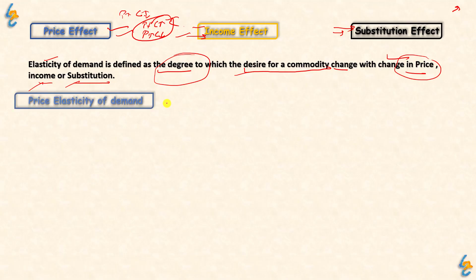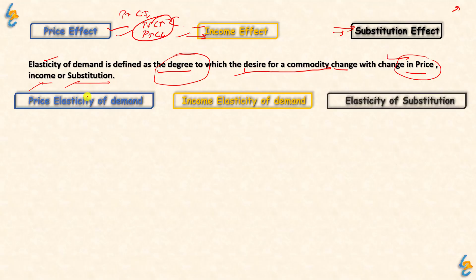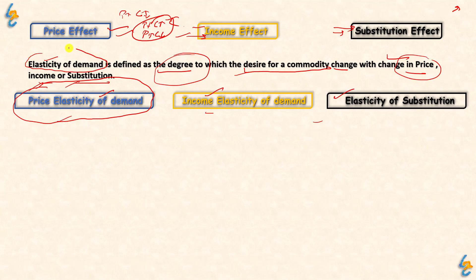So here are three cases: Price Elasticity of Demand, Income Elasticity of Demand, and Elasticity of Substitution. In this video, we will talk about Price Elasticity of Demand. If we are not told which type it is, then we will talk about Elasticity of Demand generally.